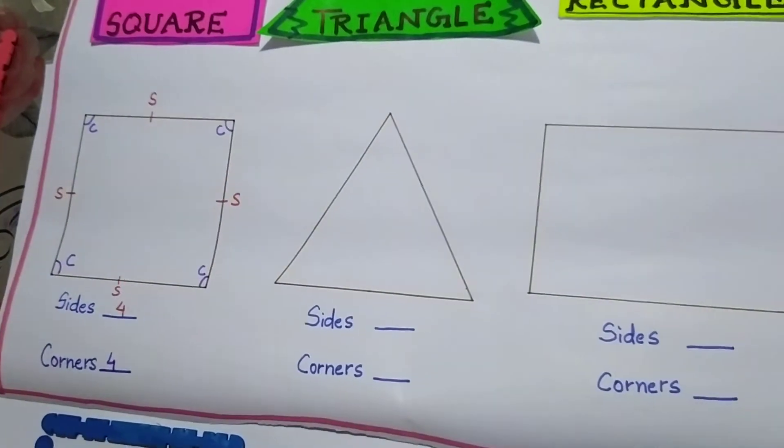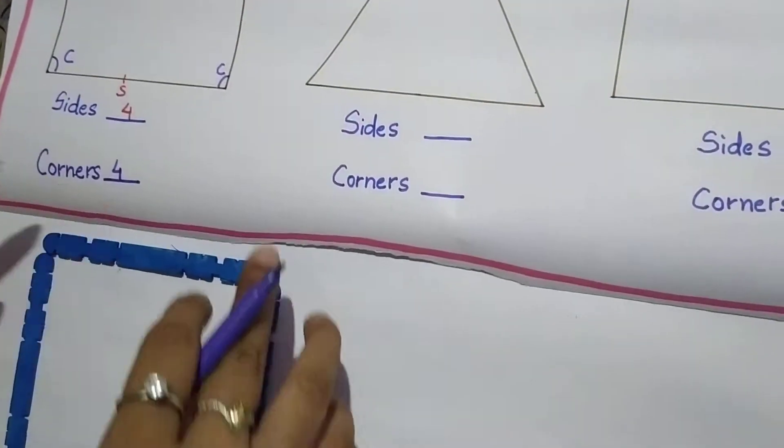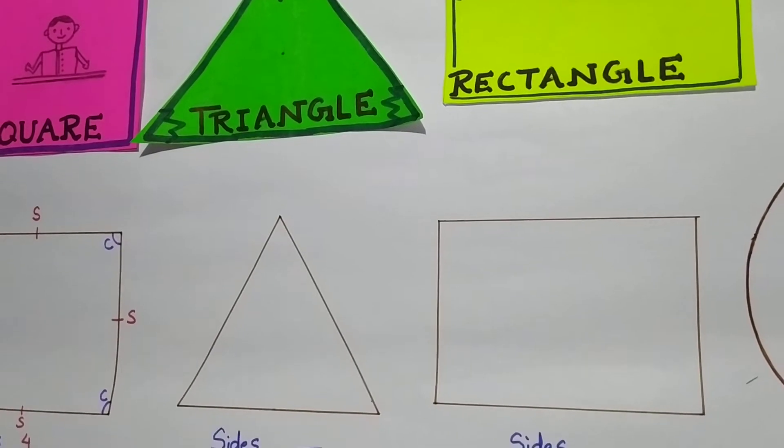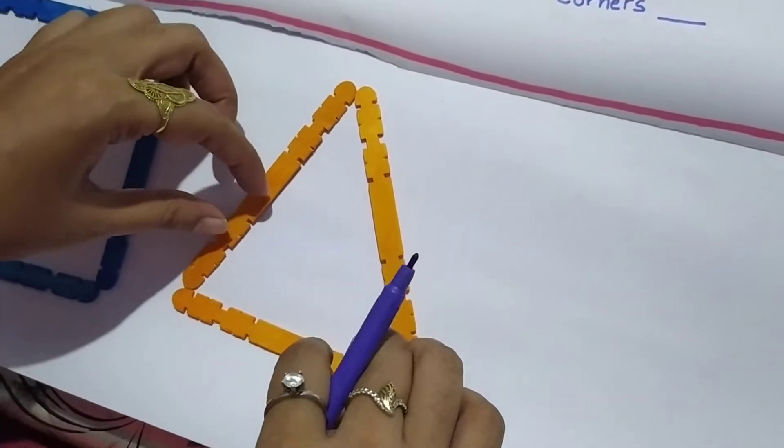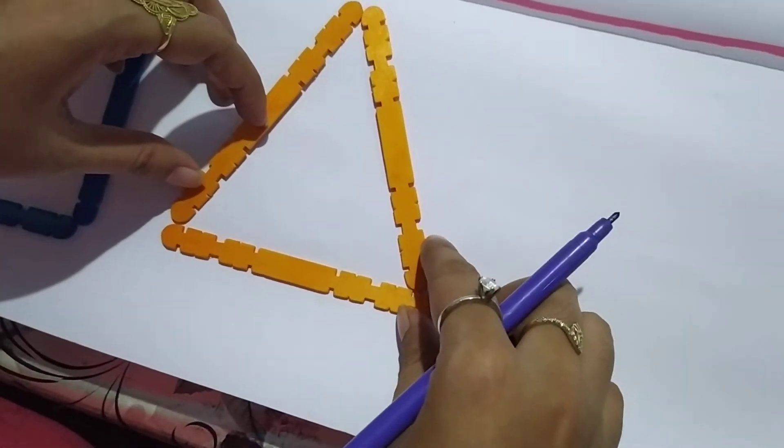Is it clear, children? Now let us move to triangle. So to make a triangle how many sticks have we used? We have used three sticks here.